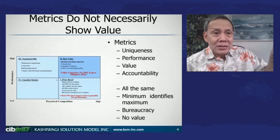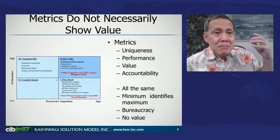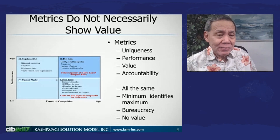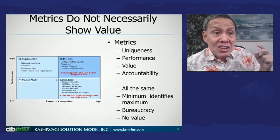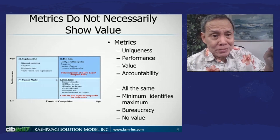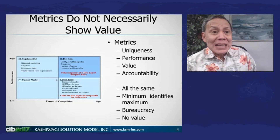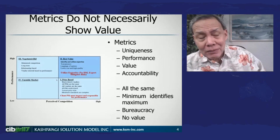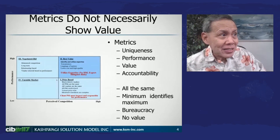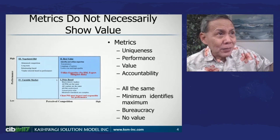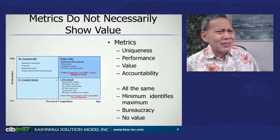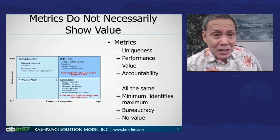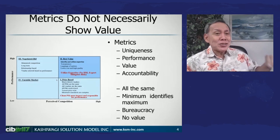When we go to the best value environment, now we have metrics, and metrics say that every entity is unique. All the vendors are trying to perform to their maximum, and they're trying to show their value, which makes them accountable. That is why this chart has high performance at the top. It means the vendors are actually trying to perform.